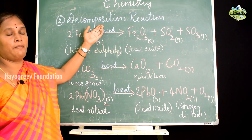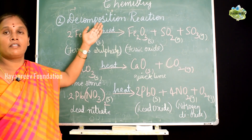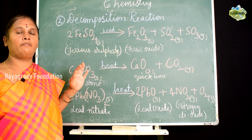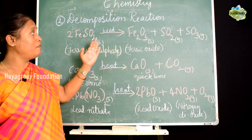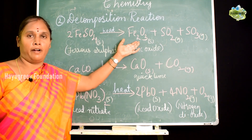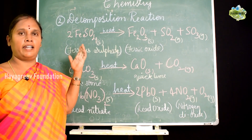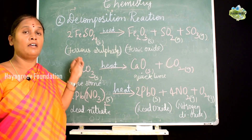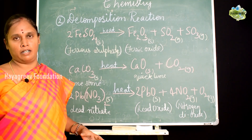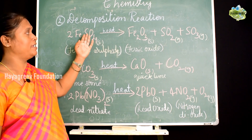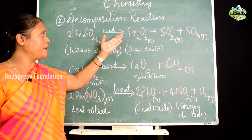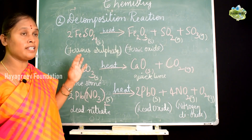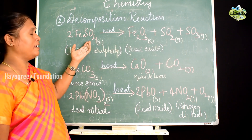The second type of chemical reaction is decomposition reaction. Decomposition reactions are reactions wherein a single reactant undergoes decomposition, resulting in the formation of two or more products. It is the opposite of combination reactions — in combination reactions, two or more reactants combine to form a single product, whereas in decomposition, a single reactant splits up to form two or more products.